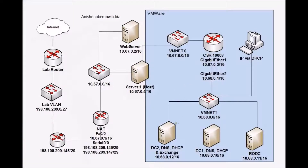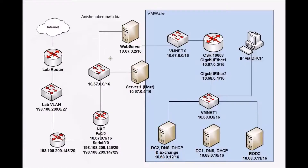I have my DC2, which contains my DNS secondary zone, a redundant DHCP server, and also my Exchange. In a typical Exchange situation, you would have your mailbox and client role inside your network, and outside your network in your DMZ with your web server, you would have an edge transport server. But since this is a small network, we've foregone the edge transport server role.